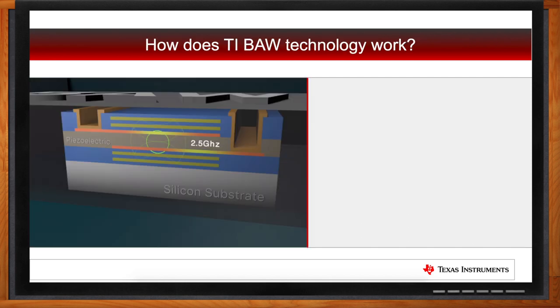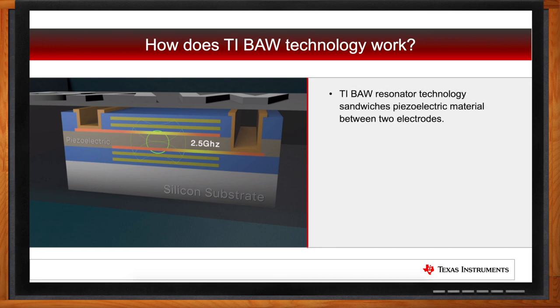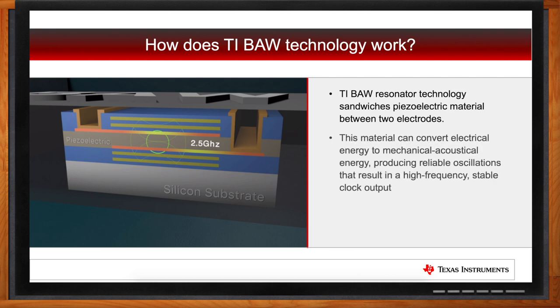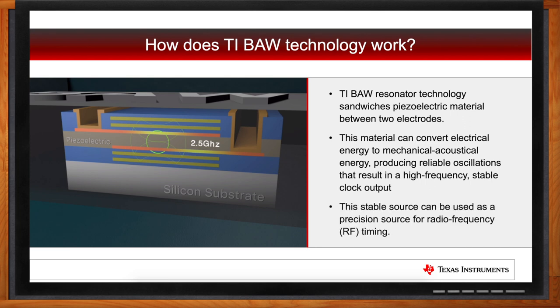The way BAW technology works is that there's a piezoelectric material made of aluminum nitride sandwiched between two electrodes — one signal and one ground electrode. When these electrodes are excited and a voltage is applied, the piezoelectric material will resonate at a very high frequency, which we can then use as a reference for RF timing or MCU applications.